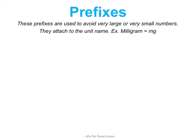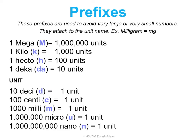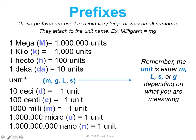Here are the prefixes you need to know: mega, kilo, hecto, deca, deci, centi, milli, micro, and nano. These attach to base units — meters for length, grams for mass, liters for volume, and seconds for time. These base units act as the 'last name,' and the prefixes are the 'first name.' Note that liter is a derived unit and the SI unit for mass is actually kilograms, but grams serve as the base for prefix attachment.